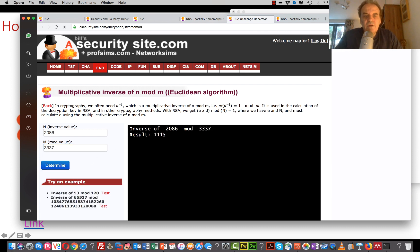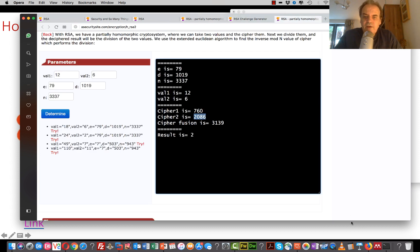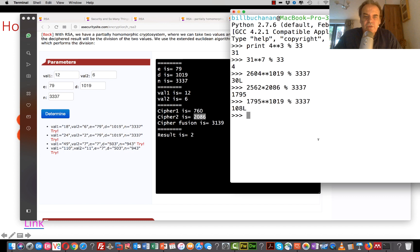So that gives us 11115. So we'll take 11115, multiply it by 760, which is cipher 1. And then we'll take mod of 33337.